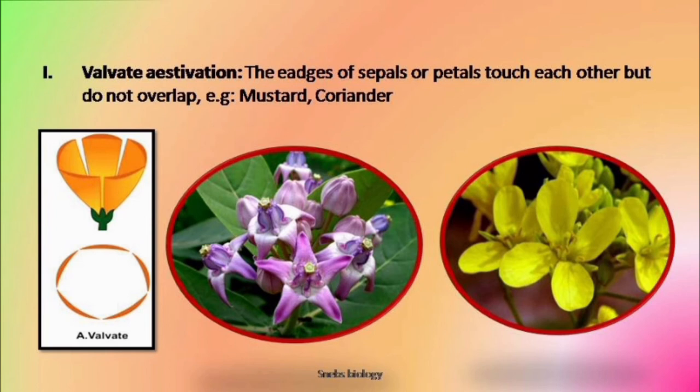If you see the sepals showing valvate aestivation, there are five sepals with their pointed ends and no overlapping of margin. This type of arrangement is seen in Brassica or Cruciferae family. This is the most common arrangement of sepals and petals. One more example is Calotropis — here we also find the valvate arrangement.